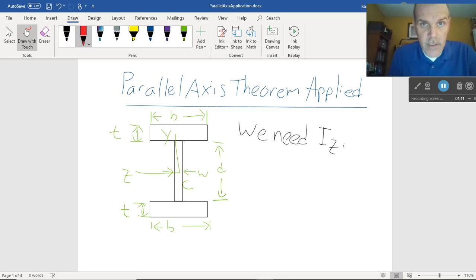Now, my students, typical students, they tend to be pretty good at splitting this up into three parts. Part 1, part 2 in the vertical part, part 3. So the web is part 2, the flanges are parts 1 and 3.